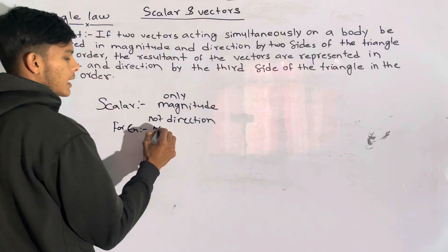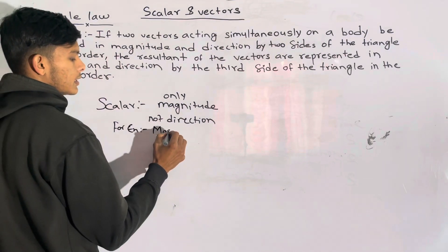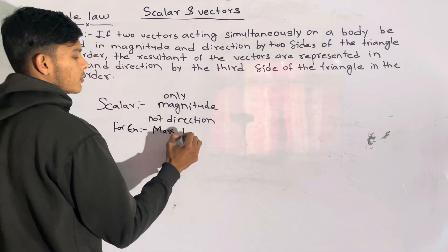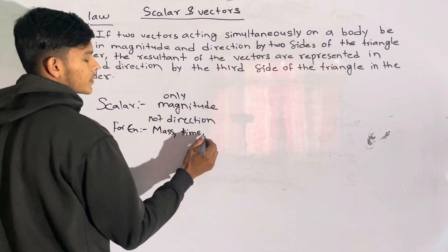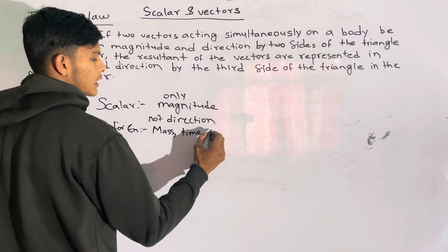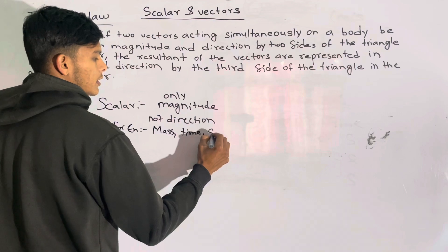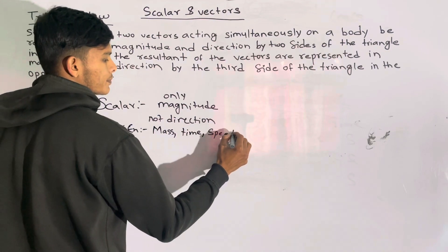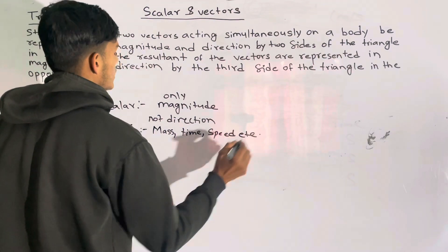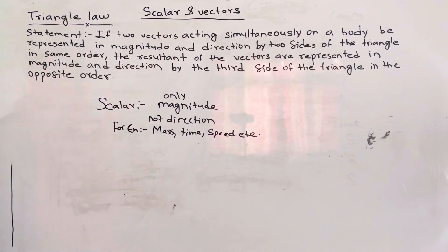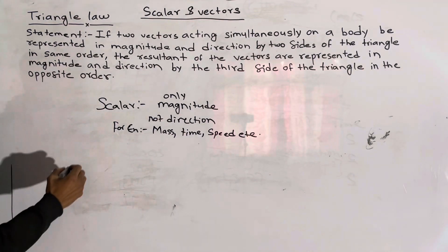For example, scalar quantities have only magnitude — like mass, time, speed. This is the magnitude only, with no direction.